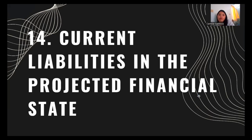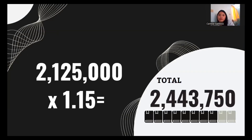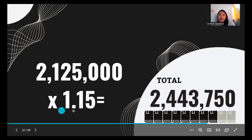Number fourteen, current liabilities in the projected financial statement. Current liabilities of 2,125,000 times the expected sales increase of 1.15 equals 2,443,750.